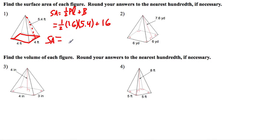So if I do one-half times 16 times 5.4, and I add 16, I get 59.2. And because it's area, or surface area, it's feet squared.